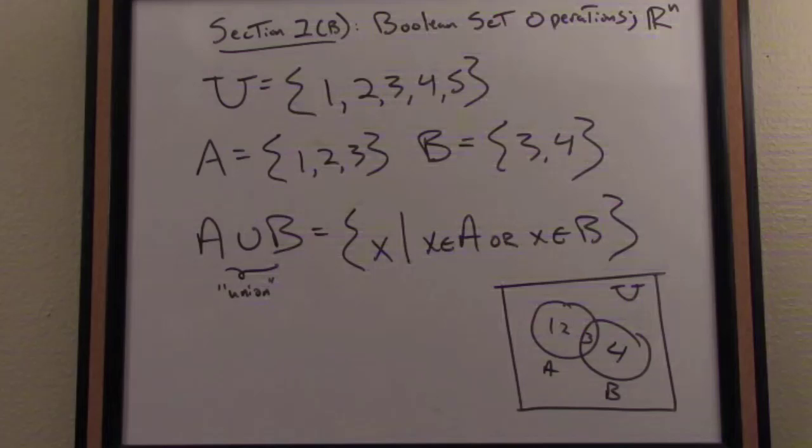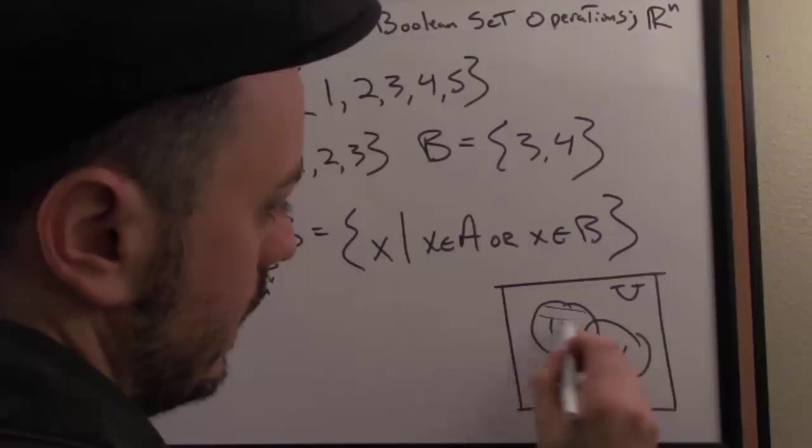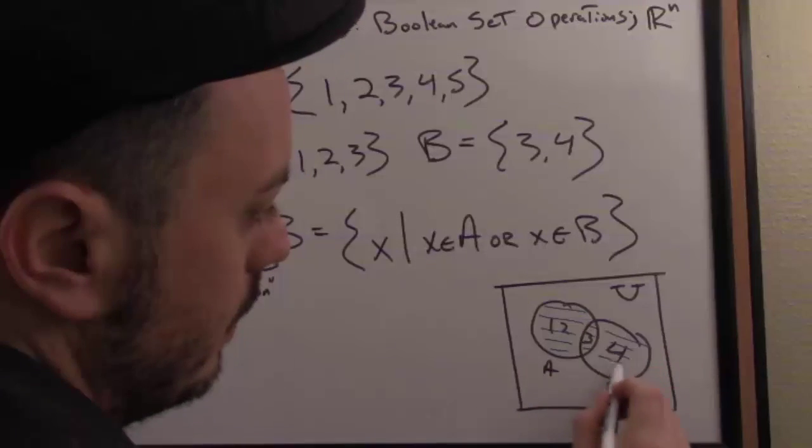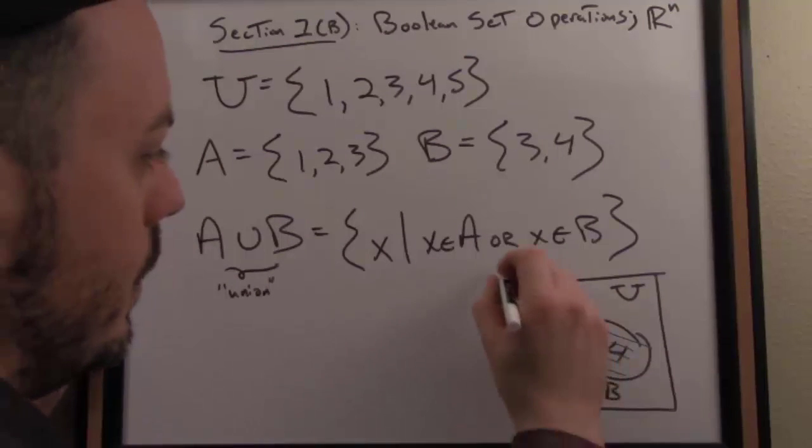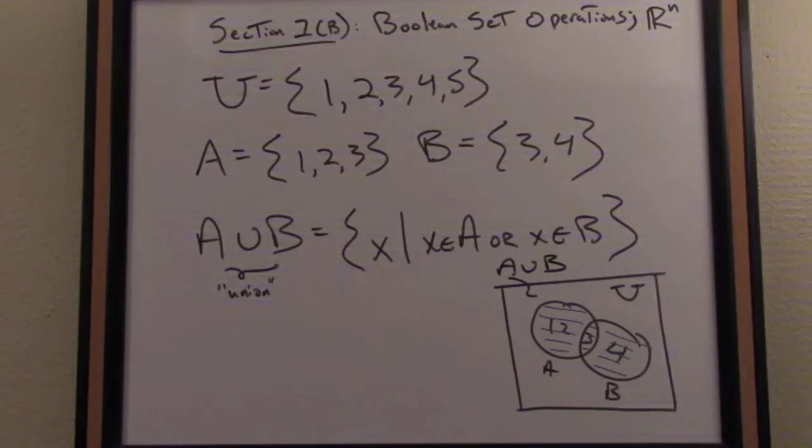So we talk about the union then. As the Venn diagram indicates, we would then shade everything that's either an element of A or an element of B. Thus, we shade together both A and B. So here is our graphical description as a Venn diagram of the union of A and B.